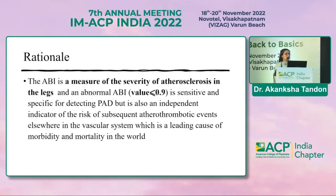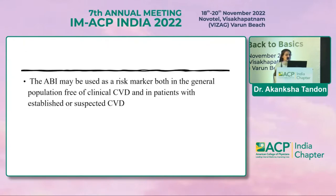The rationale of my study was that ABI is a measure of the severity of atherosclerosis in the legs, and an abnormal ABI value of less than or equal to 0.9 is sensitive and specific for detecting PAD. It is also an independent indicator of the risk of subsequent atherosclerosis in the vascular system, which is a leading cause of morbidity and mortality in the world. ABI may be used as a risk marker both in the general population free of clinical cardiovascular diseases and in patients with established or suspected CVD.